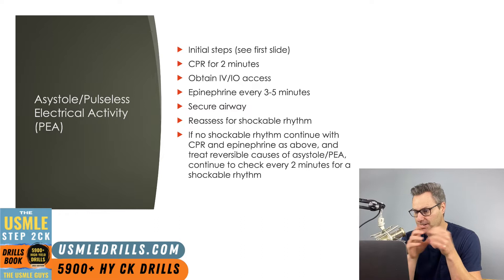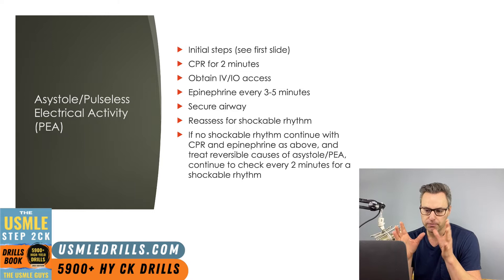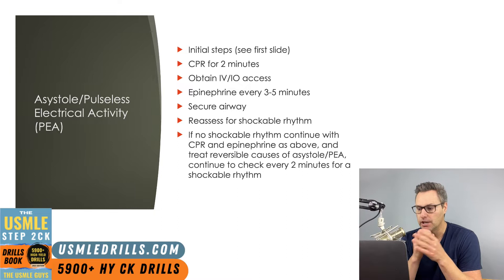Here's the sequence of events when the patient is in asystole or PEA. You always follow the initial steps: initiate CPR, give oxygen, attach the monitors and defibrillator, and stop for a pulse check and rhythm check. If you see either asystole or PEA, since these are not shockable rhythms, you want to restart CPR for two minutes, then get IV or IO access and give epinephrine every three to five minutes.